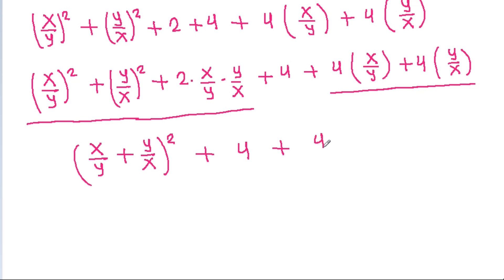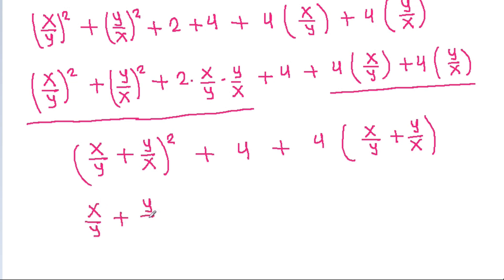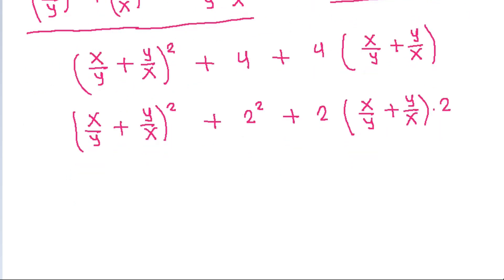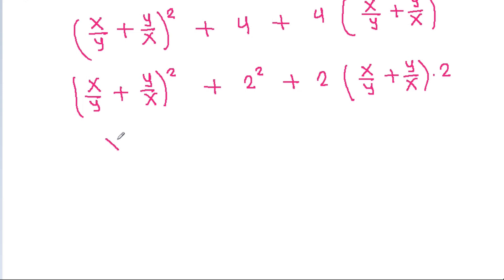This can be factored as (x/y + y/x)² plus 4 times (x/y minus y/x), which simplifies further using the grouping of terms involving x by y and y by x.